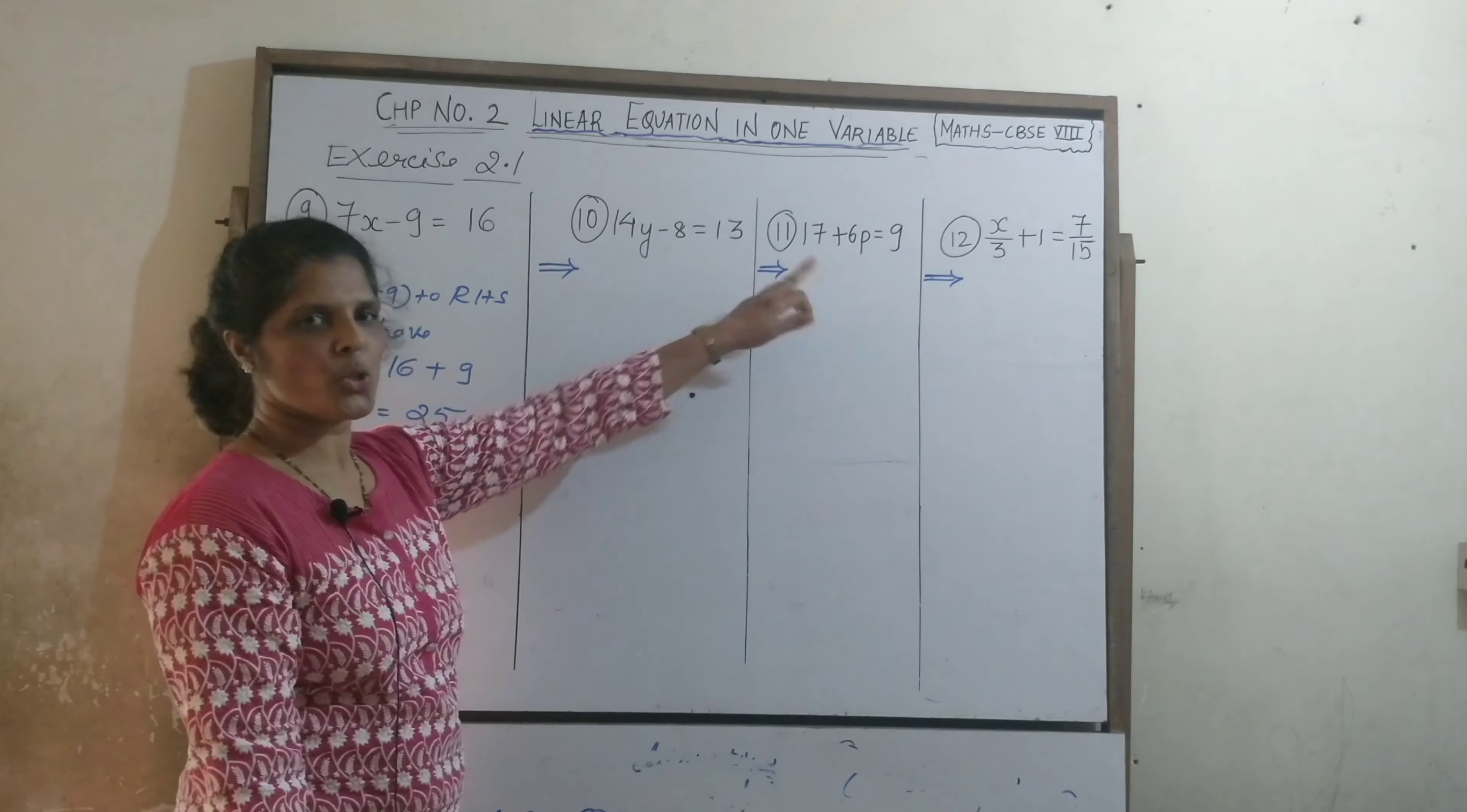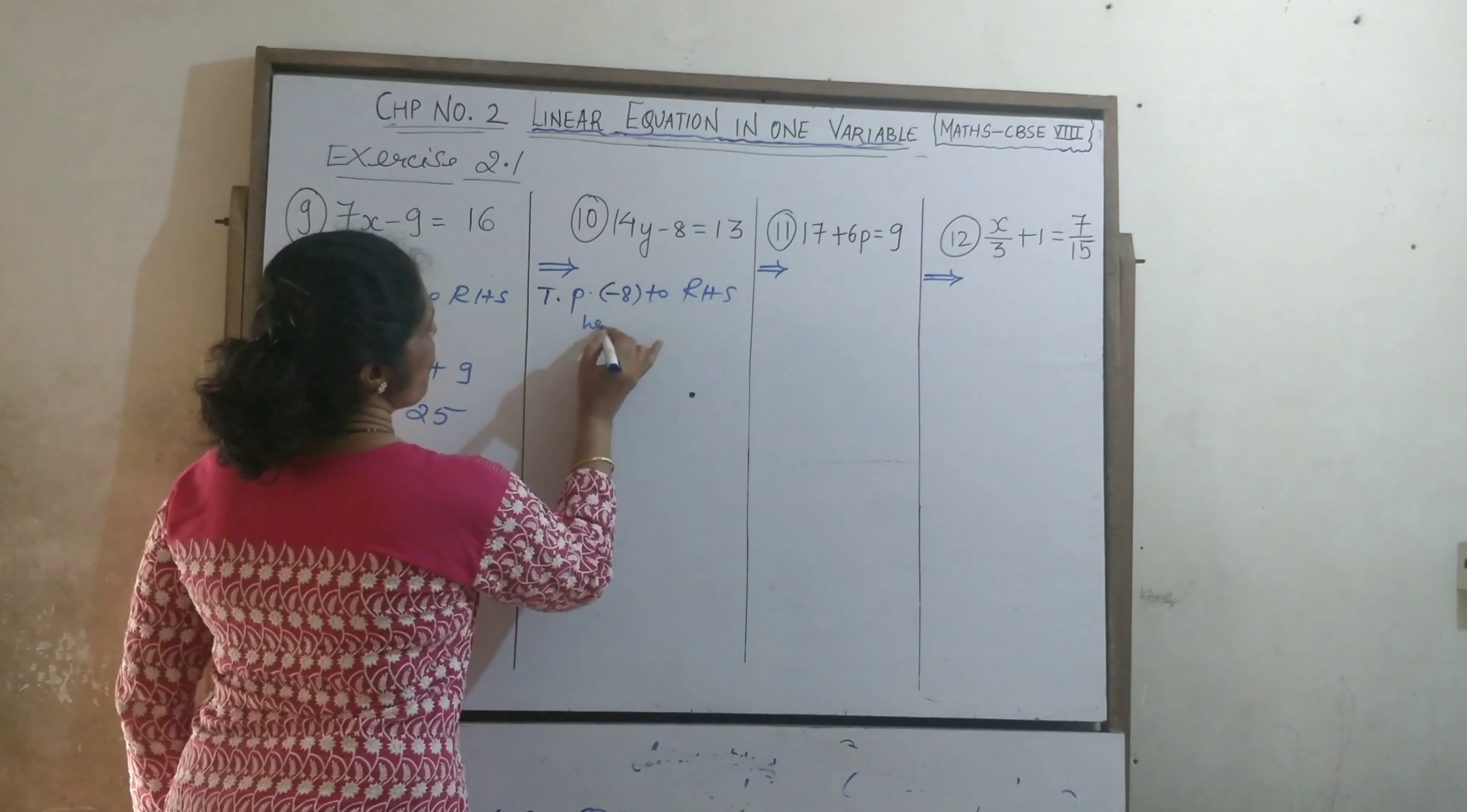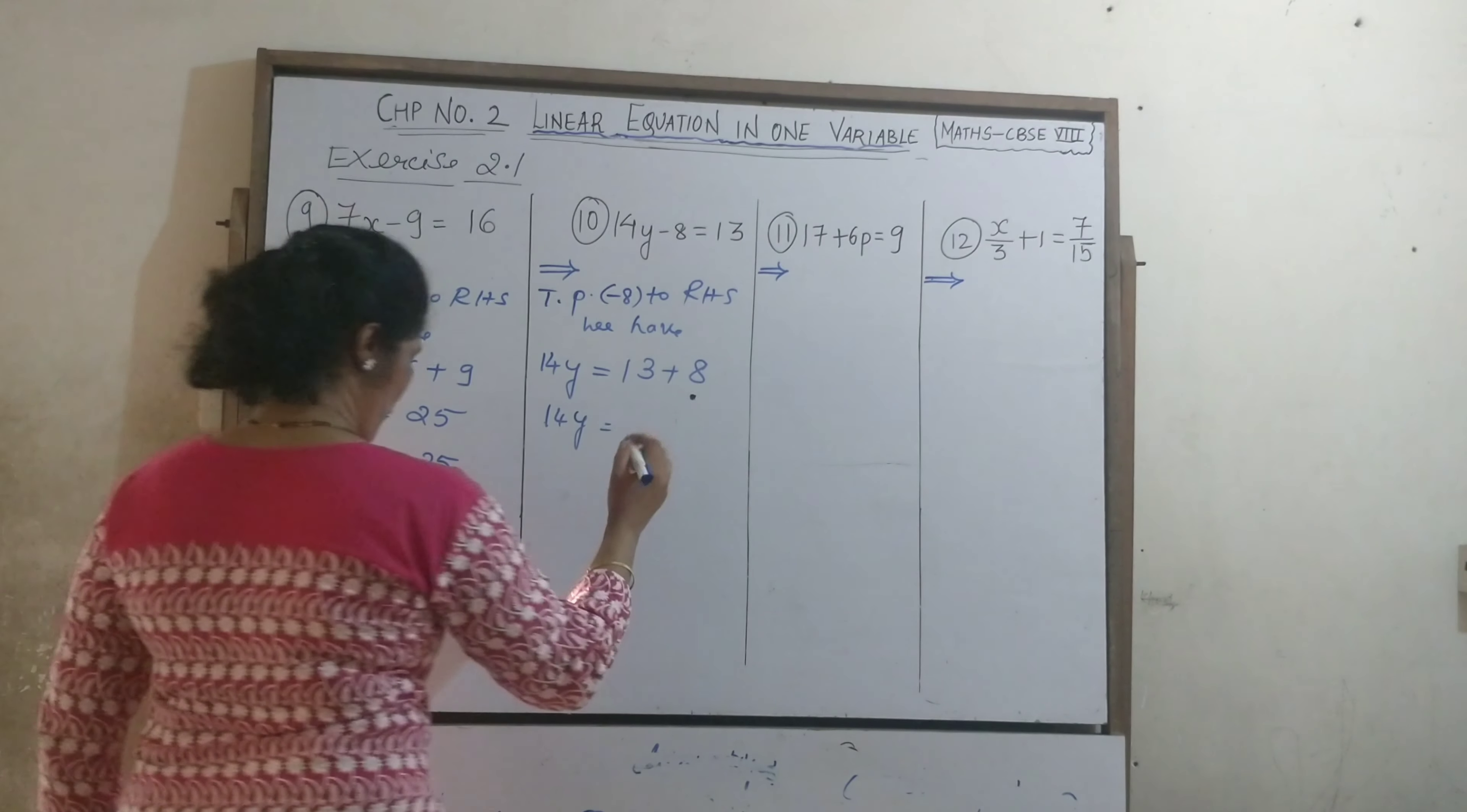Minus 8 goes to RHS now. Transposing minus 8 to RHS, we have 14y equal to 13 plus 8. 14y is equal to 21.